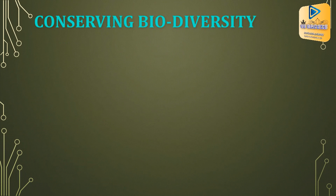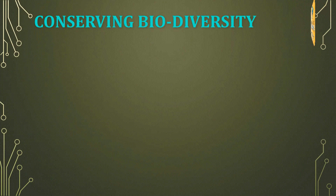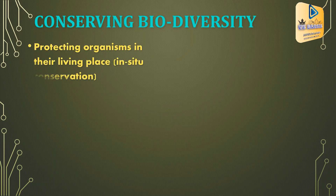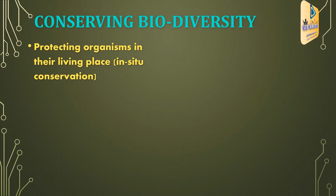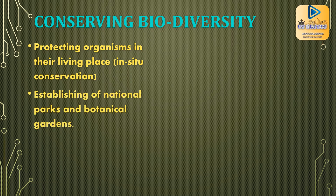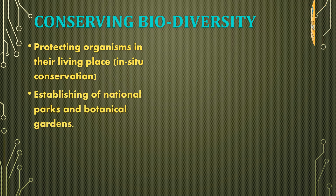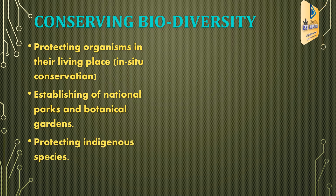Now we will pay attention to how we conserve biodiversity. Protecting organisms in their living place is called in-situ conservation. This includes establishing national parks and botanical gardens, and protecting indigenous species.